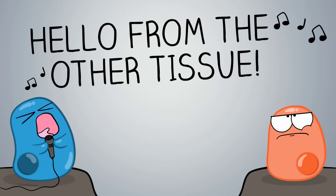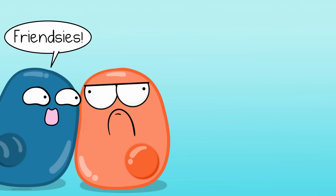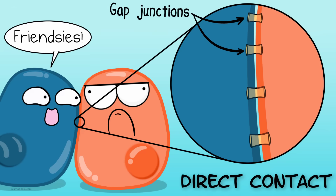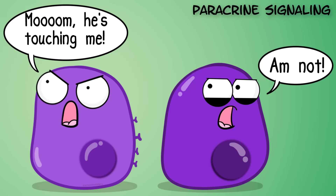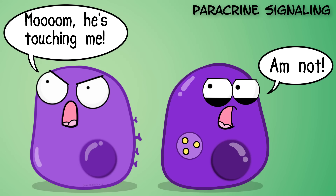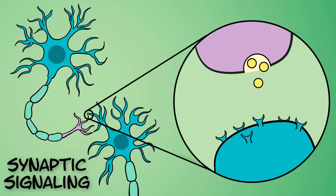When talking about signals traveling from one cell to another, distance matters. Some cells are close and have direct contact. Gap junctions in animal cells, or plasmodesmata in plant cells, are connections between two close-together cells that allow ions or other small molecules to pass without crossing the cell membrane. Paracrine signaling allows a cell to target another cell by a signal molecule that may diffuse between them. These ligands tend to be rapidly absorbed and degraded, as this is local signaling. Synaptic signaling, which specifically involves neurotransmitters and a synapse, is another example of local signaling.